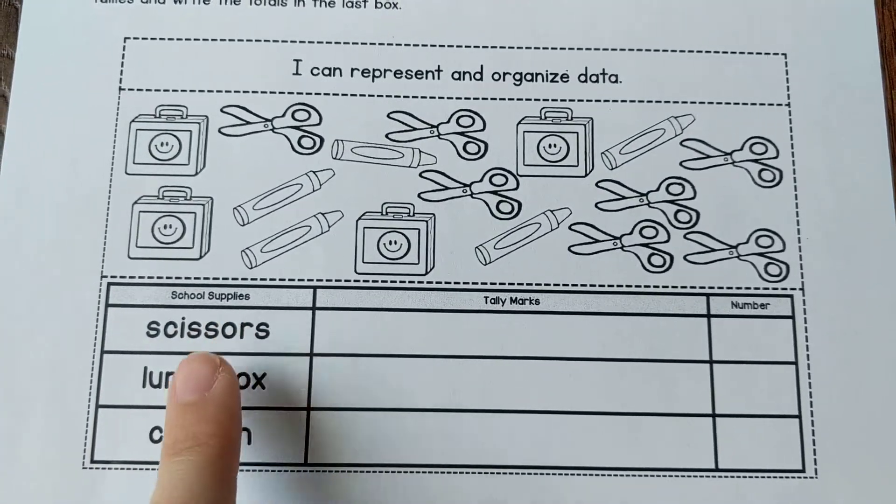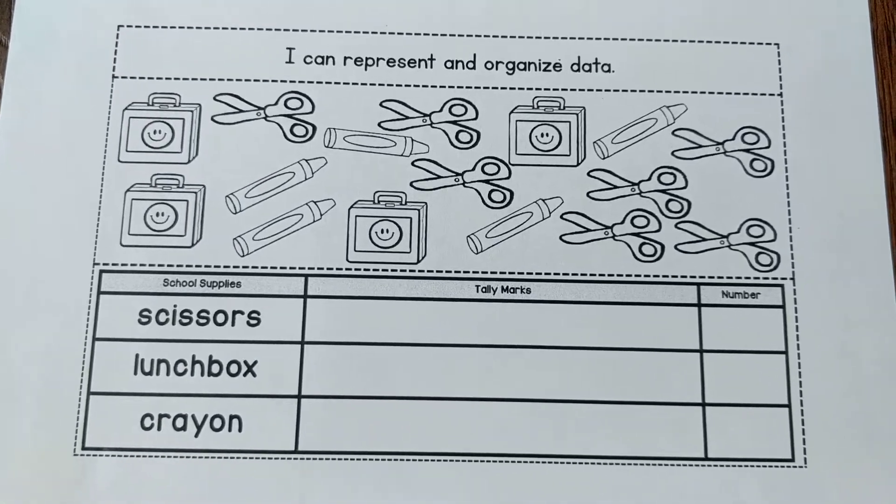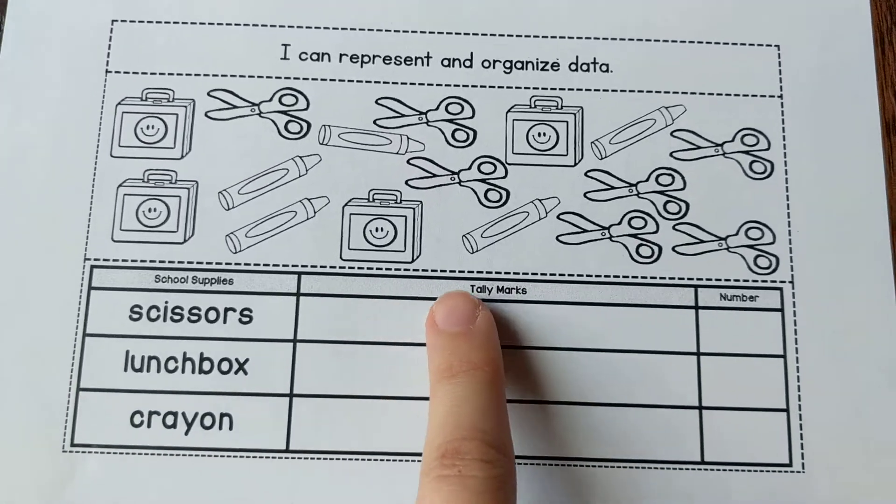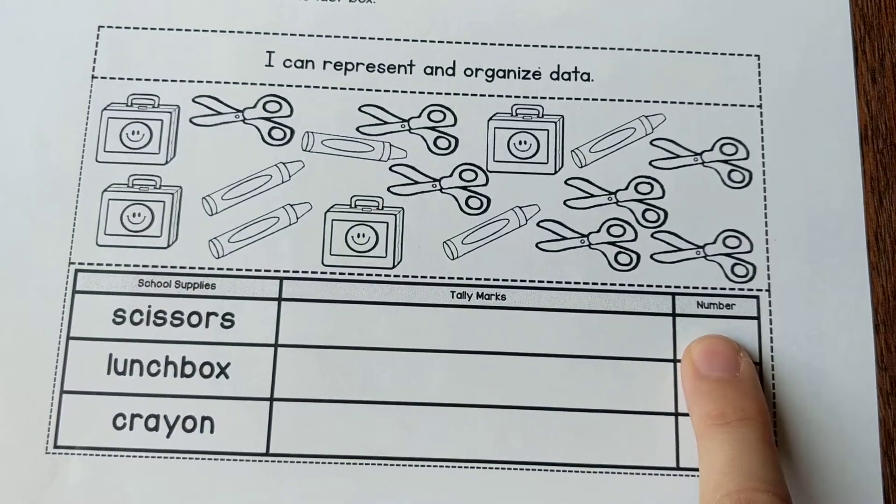We have scissors, lunchbox, and crayon as our categories. Then it says tally marks and then it says number.